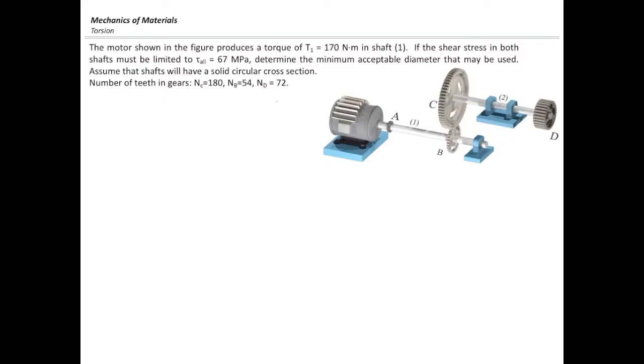Assume the shafts are having a solid circular cross-section area and the number of teeth in gears are given here. Number of teeth in C is 180, number of teeth in B is 54, and number of teeth in D is 72.